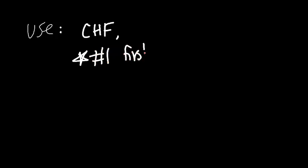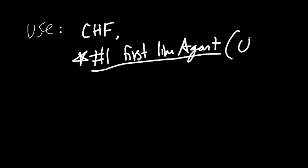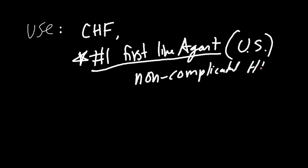So why do we use thiazide diuretics clinically? They're used for chronic heart failure as a diuretic, and hydrochlorothiazide or chlorothiazide are typically the number-one first-line agents. In the United States specifically, thiazide diuretics are the first-line agent for uncomplicated hypertension. Every country has its own guidelines, but in the US this is your number-one starting point. If the patient has heart failure or other complications, a different diuretic may be preferred.